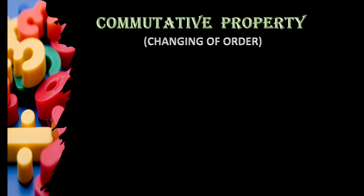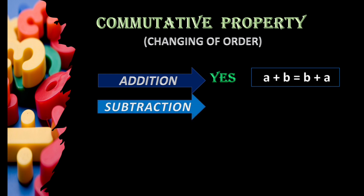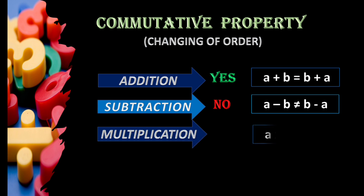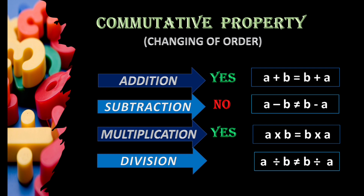Let us check commutativity for each operation. For addition: for all numbers, when we compute a plus b and b plus a, we get the same result — so it is yes. For subtraction: when we change the order of a and b, we do not get the same result. For multiplication: we always get the same result. But for division: changing the order does not give the same result. So addition and multiplication are commutative, but subtraction and division are not commutative for any numbers.